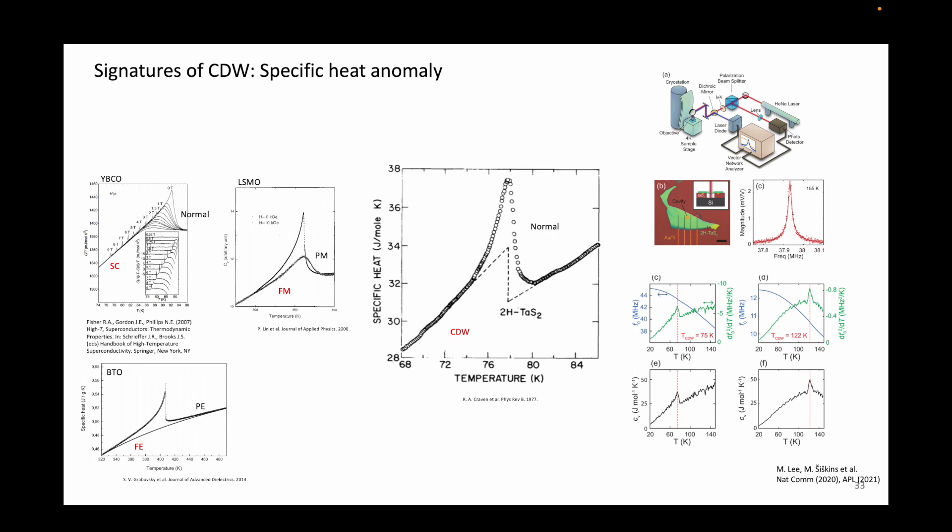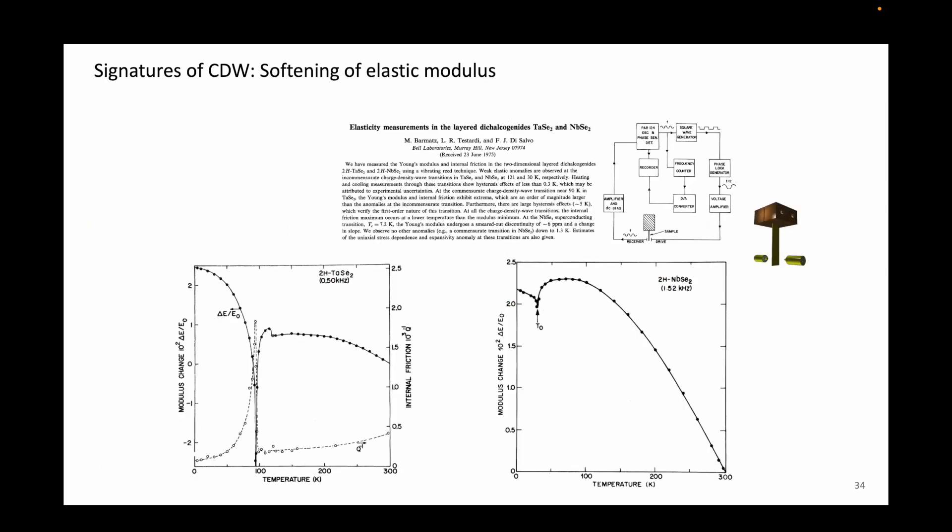I will perhaps explain these works in detail in a separate future video. Similarly, a mechanical probe called the vibrating reed measurement can be performed on bulk crystals to detect the changes in the Young's modulus at the phase transition temperature. By driving an AC signal to the nearby electrodes, the bulk crystals can be mechanically excited. When doing this as a function of temperature, these researchers observed a sudden softening of the Young's moduli of tantalum diselenide and niobium diselenide.